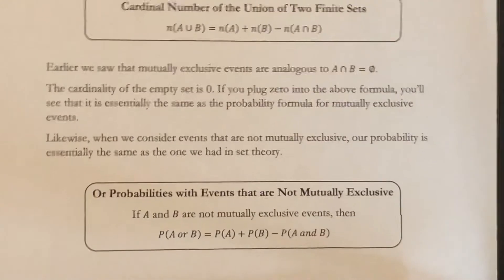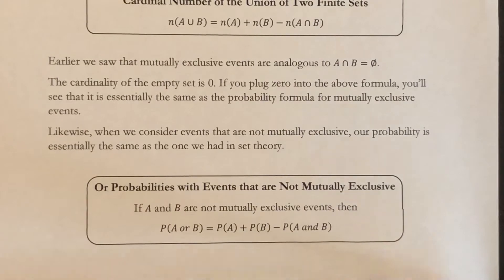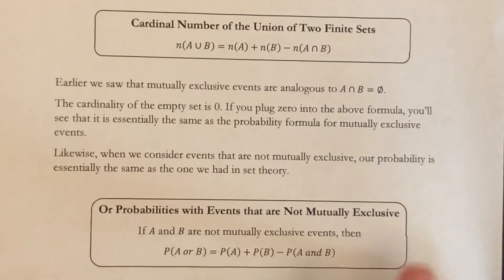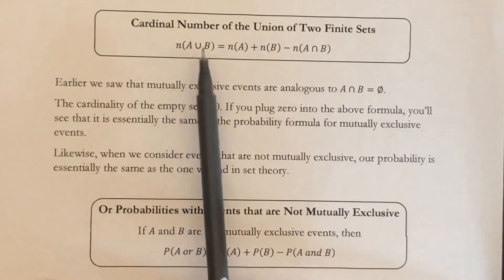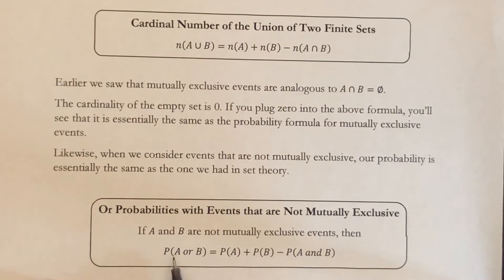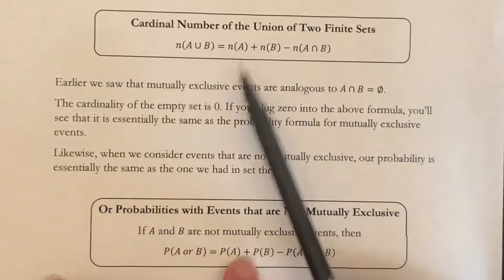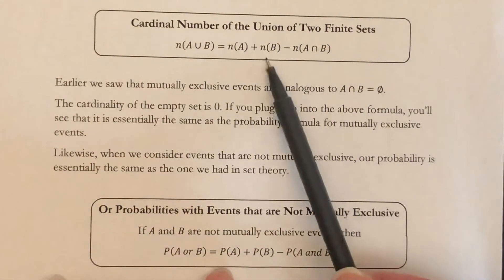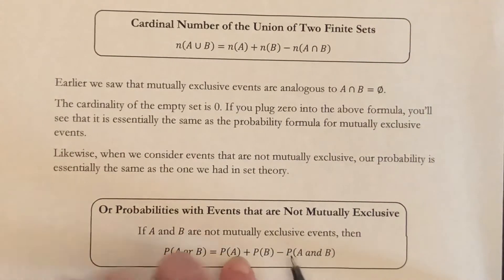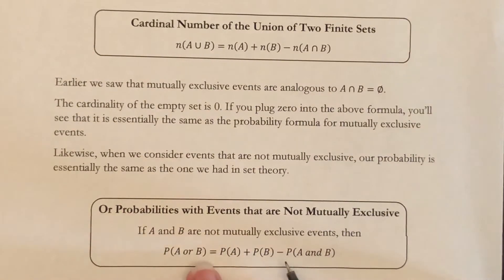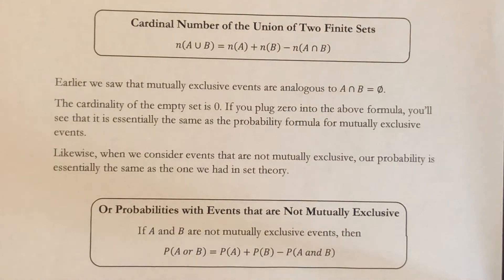So we have the same essential formula here. The number in A union B, which is the number in A or B — the probability of A or B — equals the number in A (the probability of A) plus the number in B (the probability of B), subtract away the number in A and B (subtract the probability of A and B). These are very closely related; it's just different notations because it's a different field of math. It's the same concept.